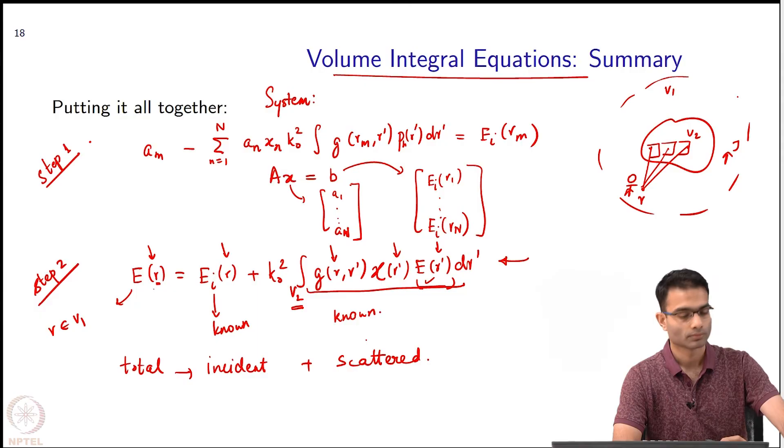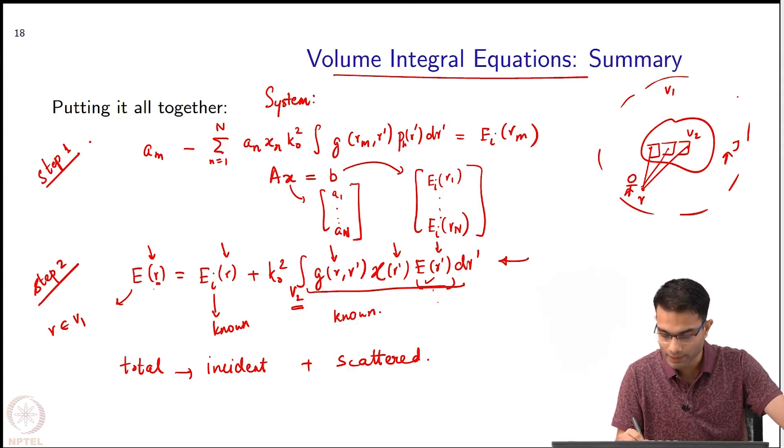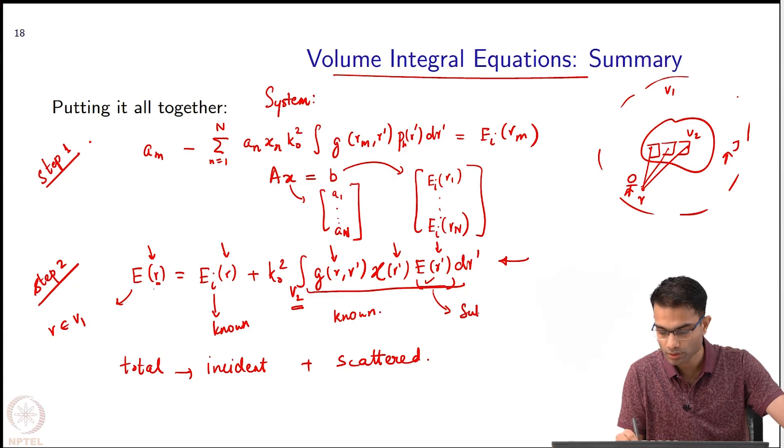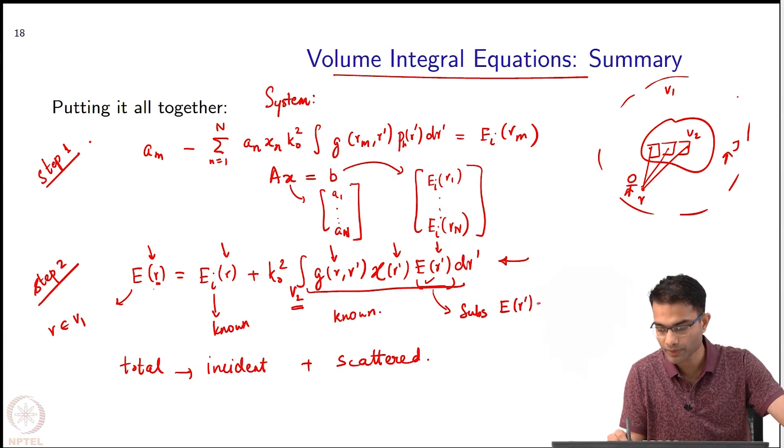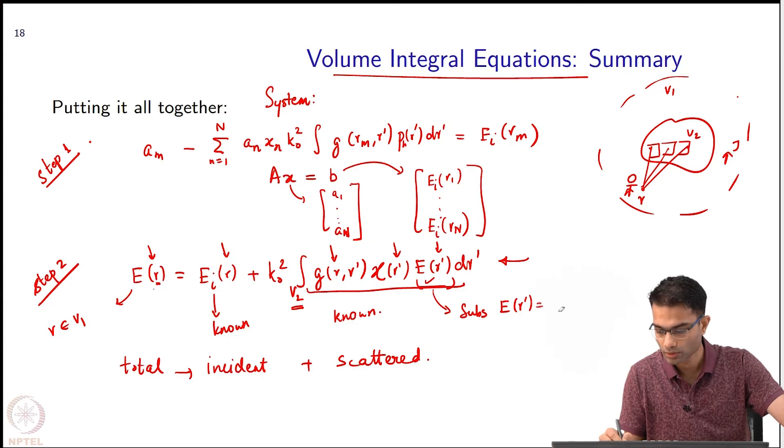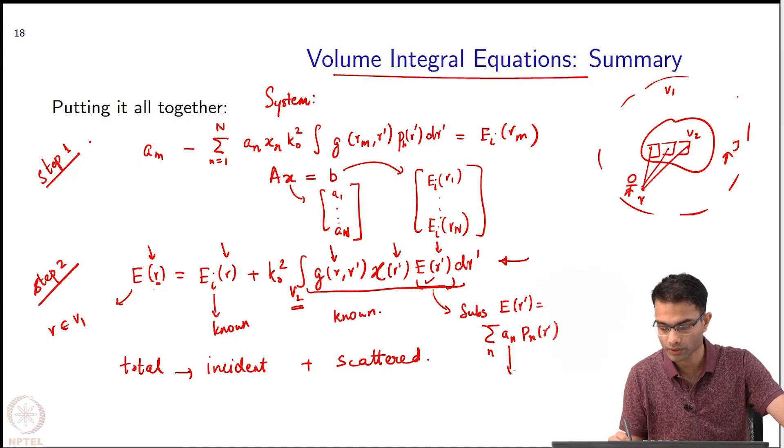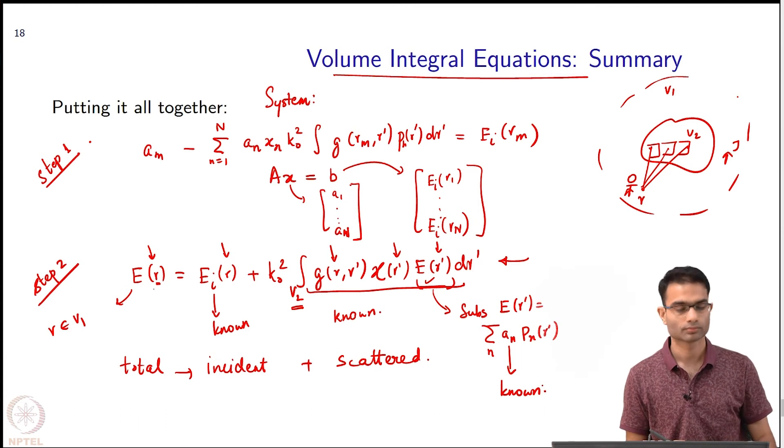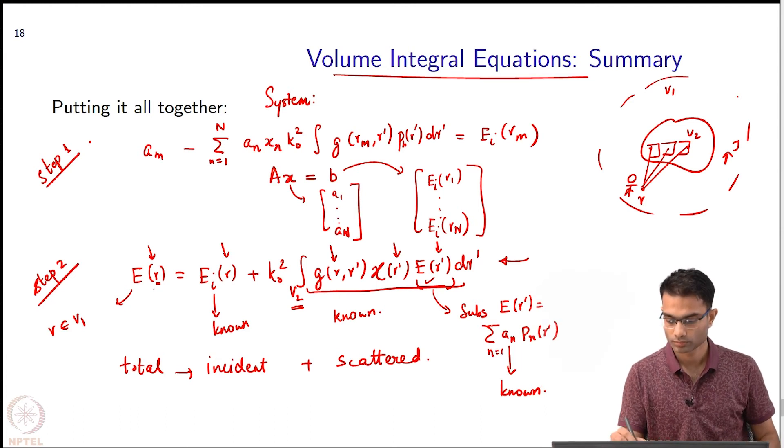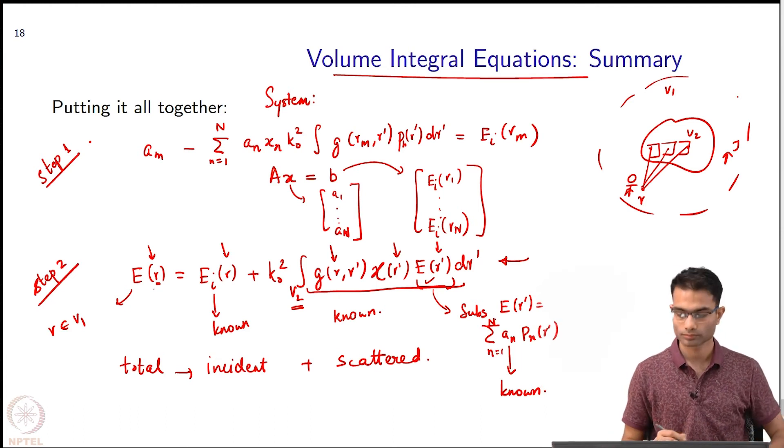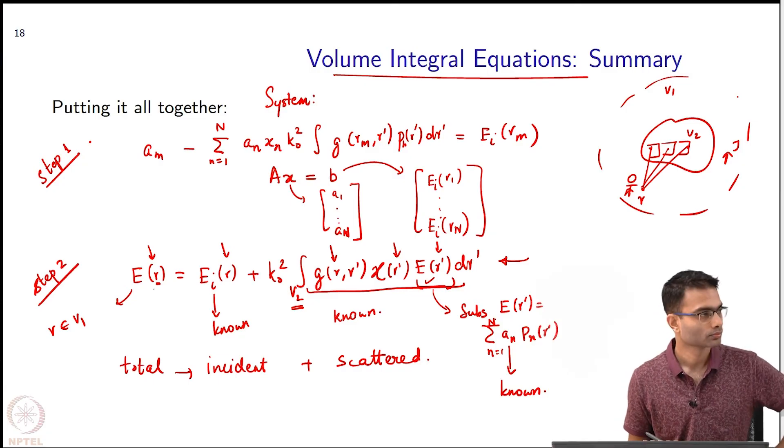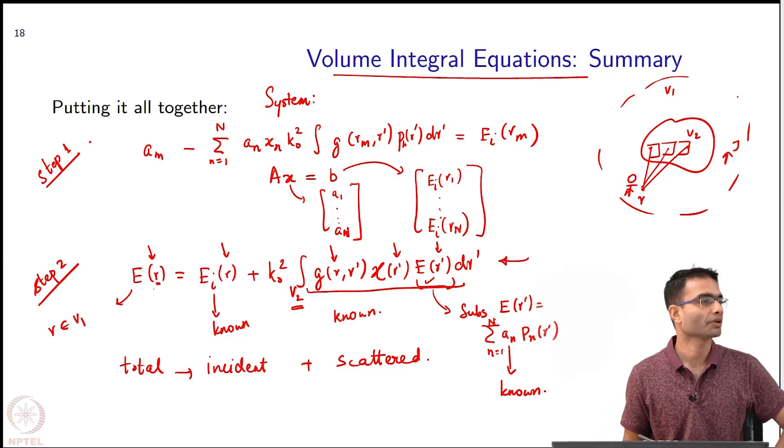So in step 2, when we calculate the integral, here exactly is where we will substitute E(r') equal to summation of A_n P_n(r'). Now this is known. So after this, basically you can know the E(r) at any point. At any point after this you can know E(r) at any point.